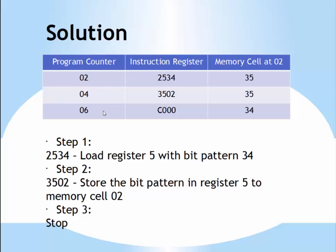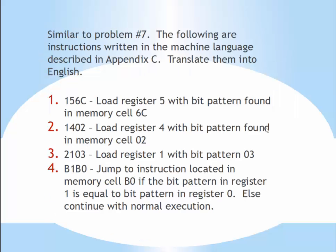This is what you're required to do — record the contents at the end of each fetch cycle. If it had said record the contents at the end of each execute cycle, then some of these contents would be a little different based on what has been changed after the execution. That's problem number five. Now problem number seven — again we need to refer to Appendix C for all of these problems, so keep the appendix handy.